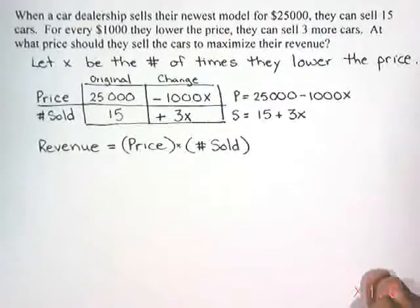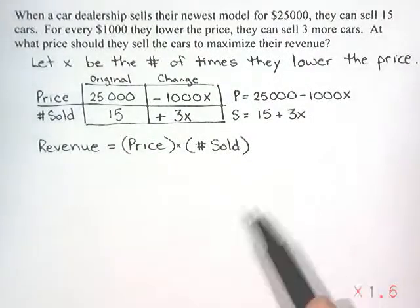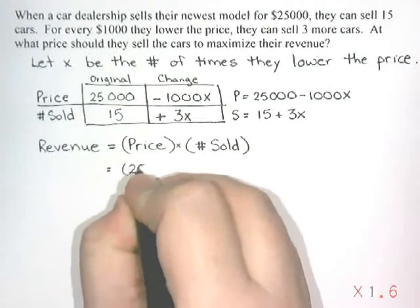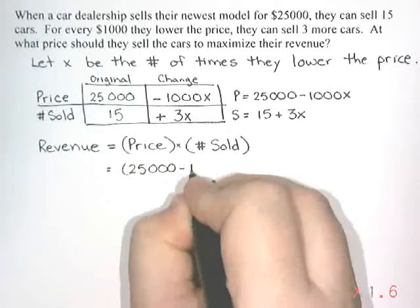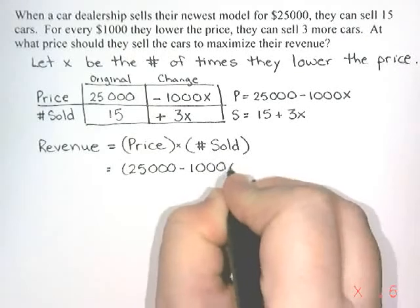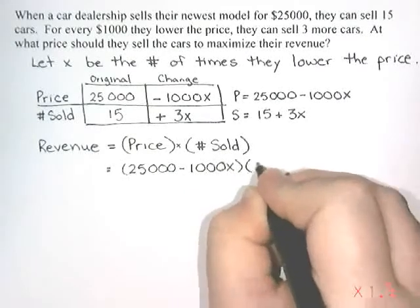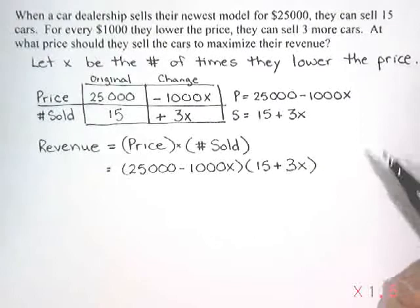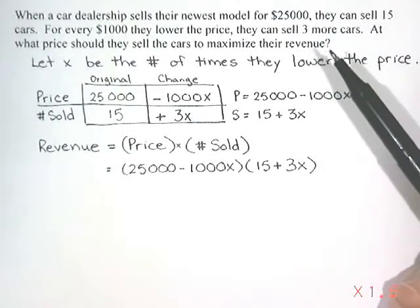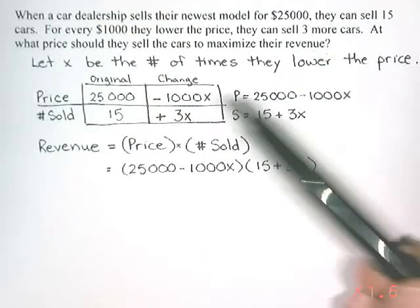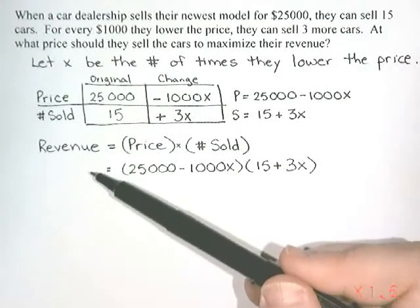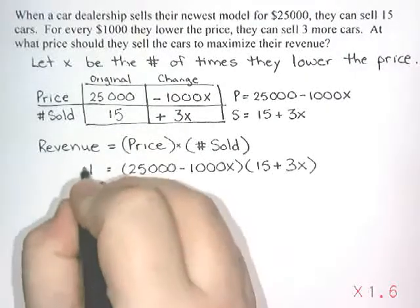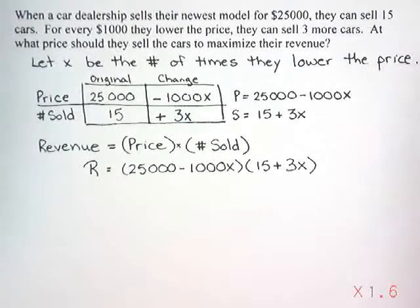If I go to substitute in my information, I know that the price is going to be $25,000 minus $1,000x, and the number sold is 15 plus 3x. Now the question didn't tell me what the revenue is that they were going to make, so I don't have a number to put in here. I could keep writing the word revenue, but I'm just going to shorten it to the letter R so I don't have to write quite as much.